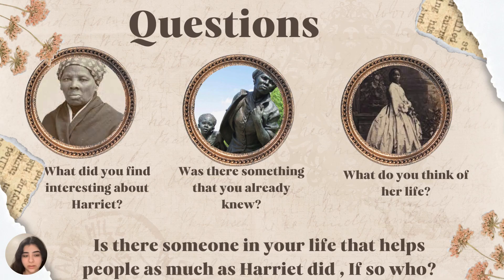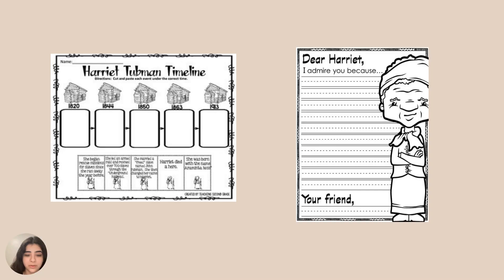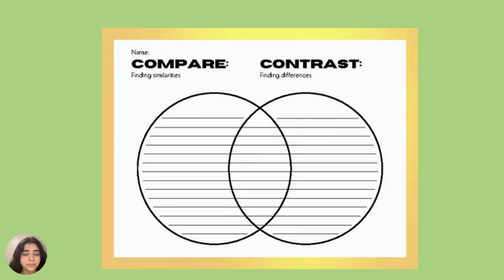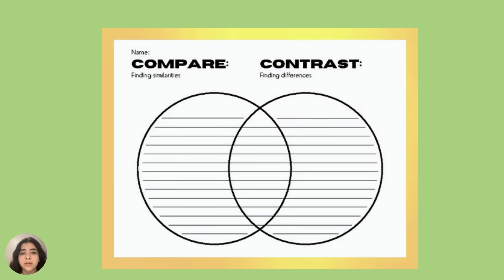The question — is there someone in your life that helps people as much as Harriet did? — leads into the next activity. Students have to complete a compare and contrast chart, comparing Harriet to someone in their life that they look up to, that's been helpful, or that's helped other people. It could be a superhero, a family member, a friend — it could be anyone. They have to find similarities and differences and what they have in common.